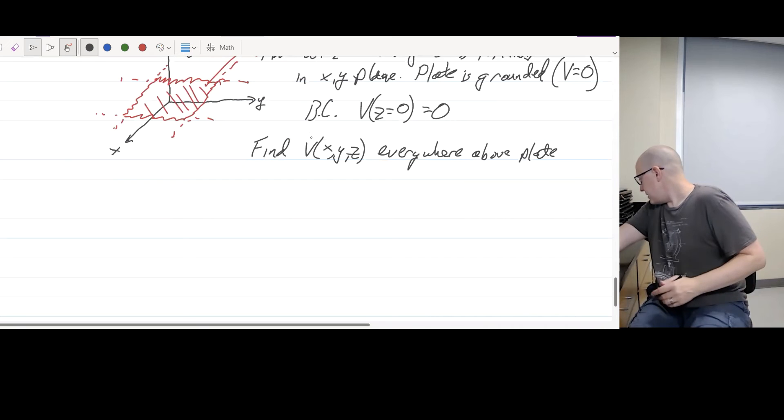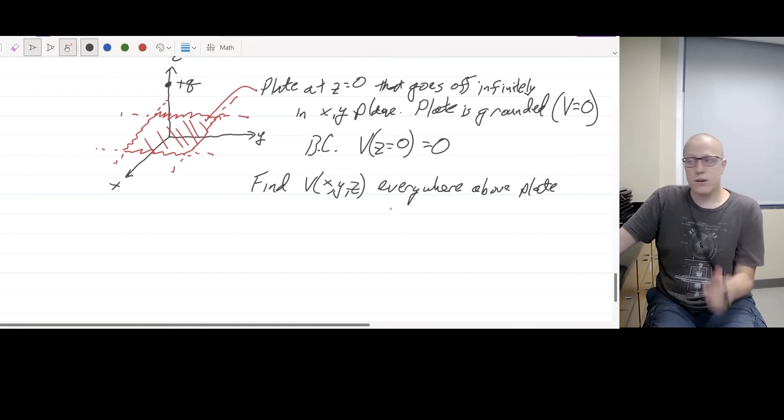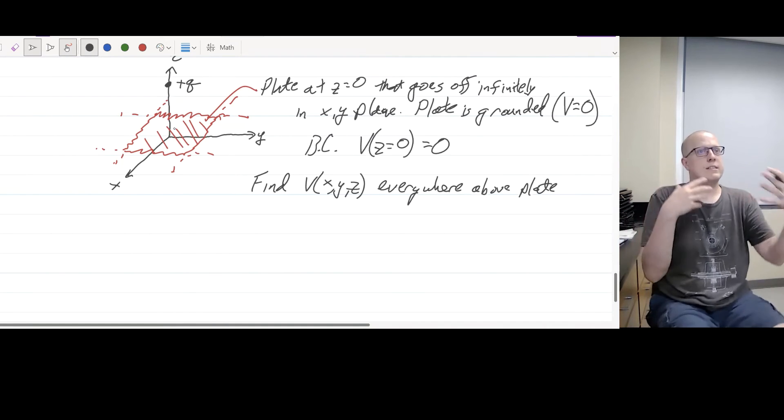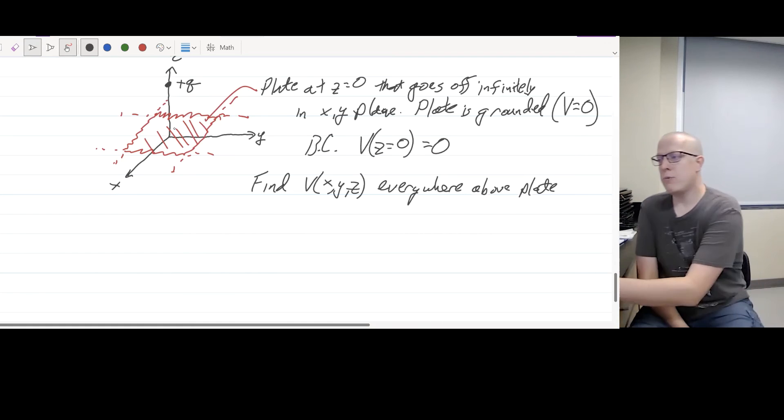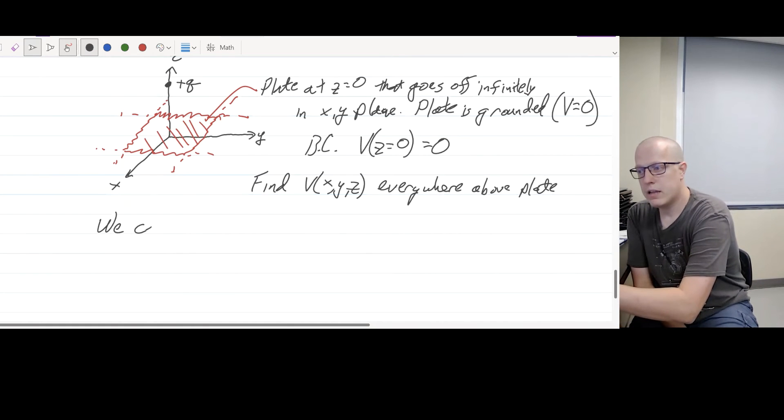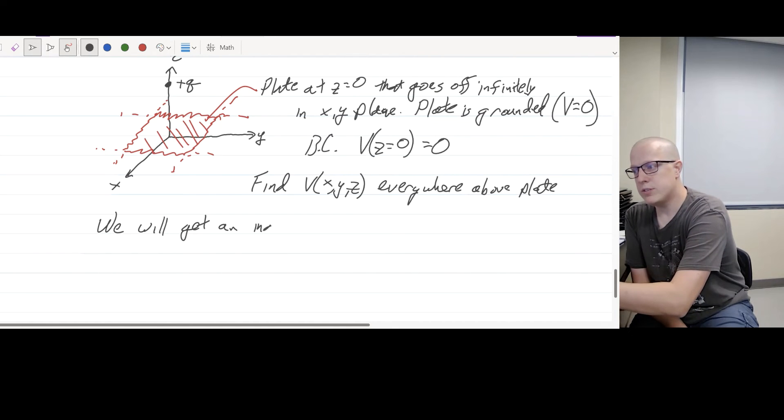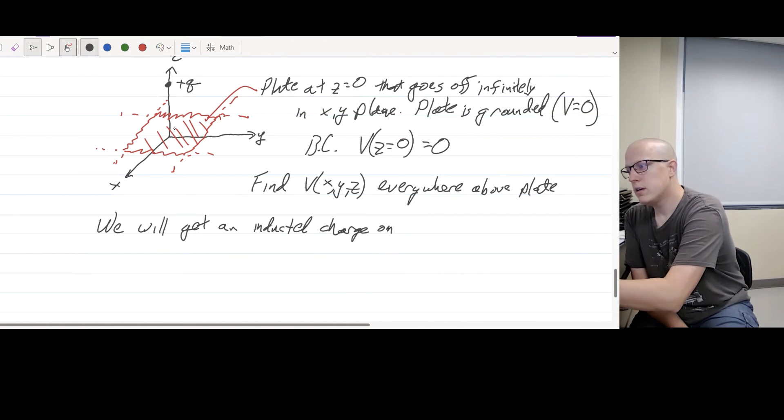And so, another way to think about this is that this positive charge here is gonna, because this plate is a conductor, it's an infinite conductor. It means it can move the charges around and we can get, in fact, not we can, we will, we will get an induced charge on the infinite plate. Since it is a conductor.